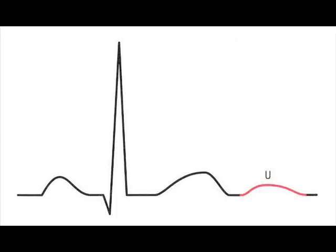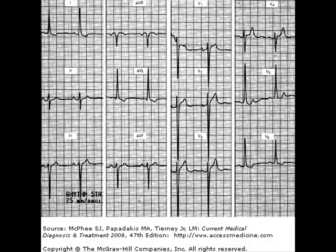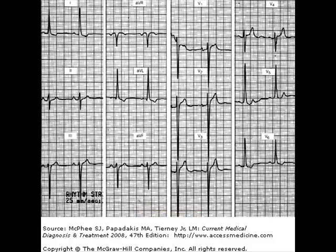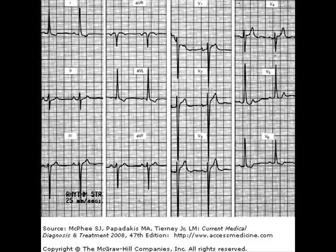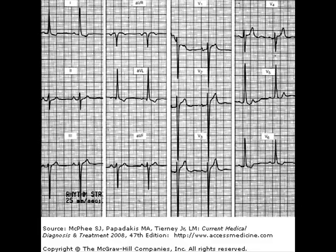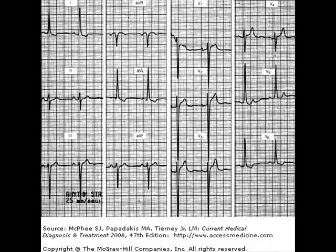Now let us see calcium abnormalities. Whenever calcium increases in the blood, cardiac contraction increases and there will be narrow QRS complexes, meaning the ventricles contract very fast. You can see here very narrow, very sharp lines. This is characteristic of hypercalcemia — high calcium level.